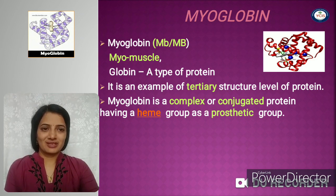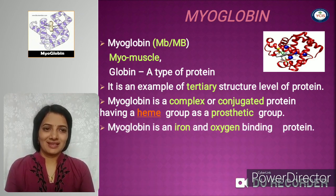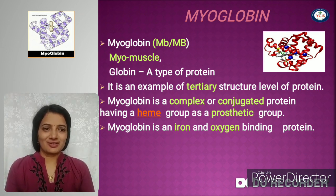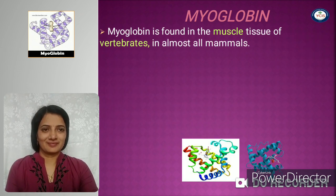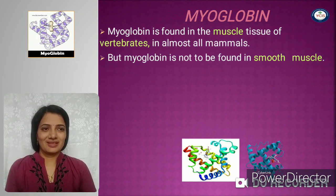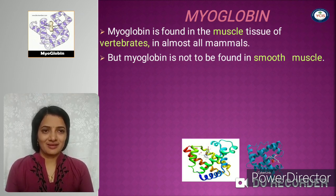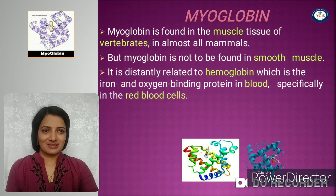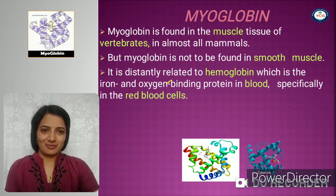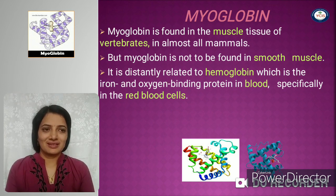Myoglobin is a complex conjugated protein containing a heme group as a prosthetic group. It is an iron-containing oxygen-binding protein. Myoglobin is found in the muscles of almost all animals, but not in smooth muscles. It is distinctly related to hemoglobin, which is again an iron and oxygen-binding protein present in the blood, especially in the red blood cells.